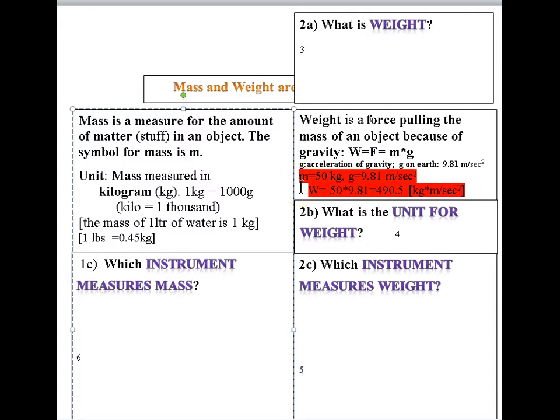You just calculate 50 multiplied by 9.81 equals 490.5 and the units you would use here is kilogram from mass and meter per second squared from acceleration of gravity. So your 50 kilogram of gold has a weight on earth of 490.5 kilogram meter per second squared.